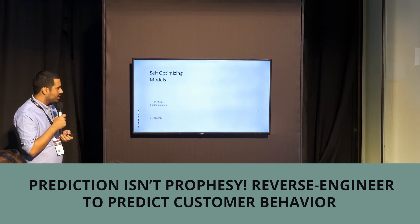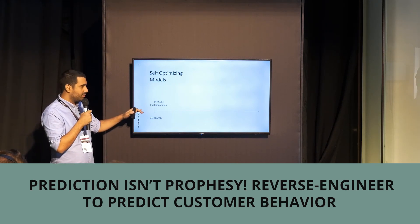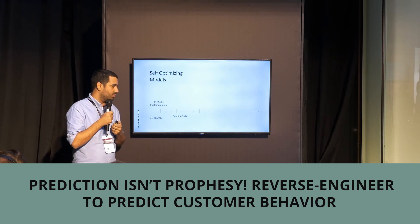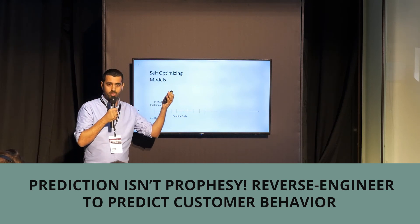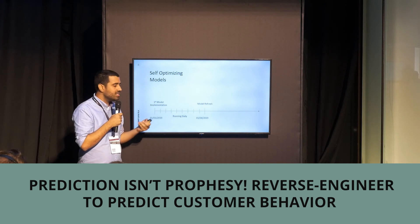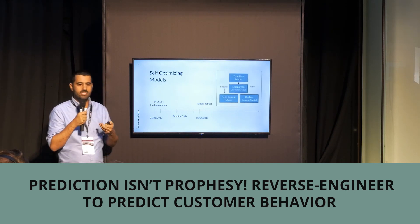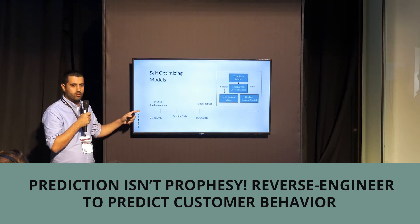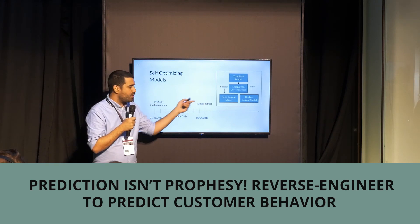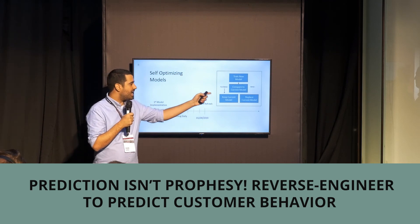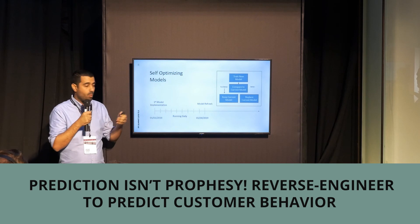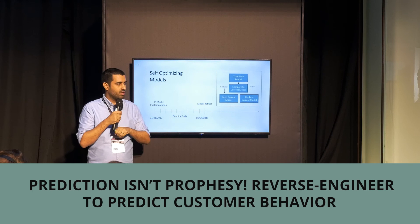Another powerful capability is building a self-optimizing model — a predictive model that is updated automatically on a periodic basis using newly available data. The motivation is that in most businesses, customer behavior is dynamic and evolves over time, so we want a model that adapts accordingly. For example, a model implemented at the beginning of the year runs every day and assigns each customer a predictive value. After a few months, we refresh the model by creating a new version based on newly collected data. If the new model is more accurate than the current one, we replace it; otherwise, we keep the current one. Once this procedure is set up, everything runs automatically with no manual effort.